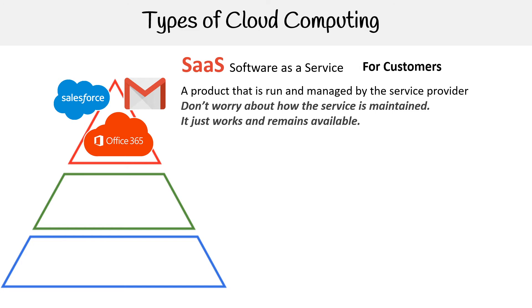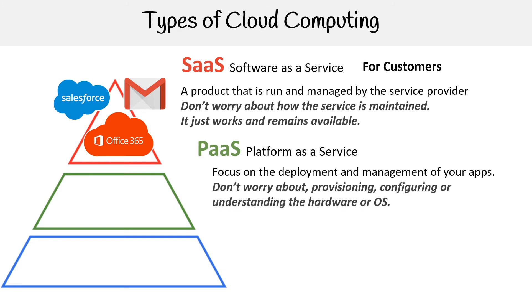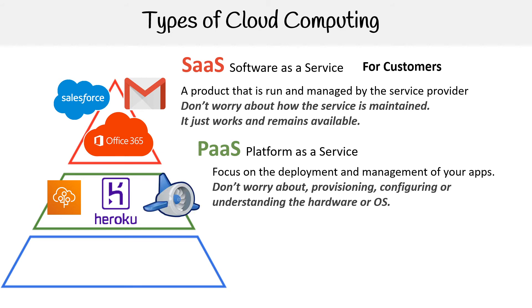So you've been using cloud all along. The next level down is Platform as a Service, which is PaaS. This focuses on the deployment and management of your apps — you don't worry about provisioning, configuring, or understanding the hardware or OS to launch your web applications. For AWS, this could be Elastic Beanstalk. There's also Heroku, which is a very popular provider among junior developers, and then Google App Engine. This is really suited for developers; it makes development a lot easier without having to worry about setting up your servers.